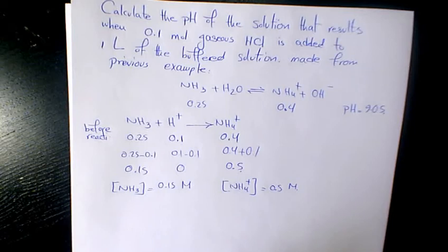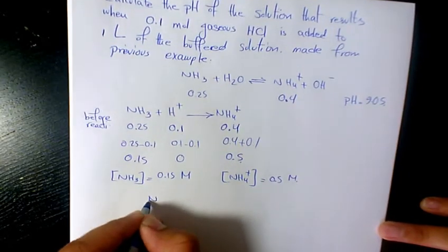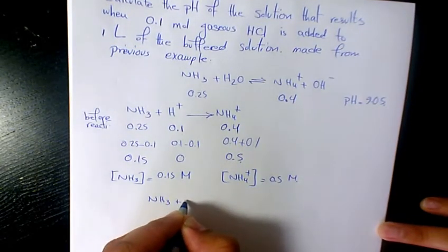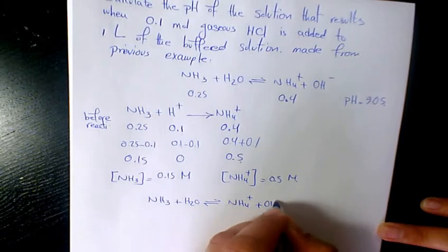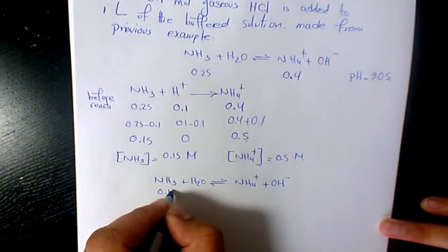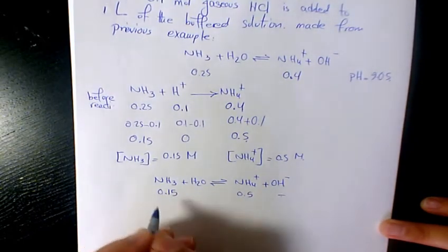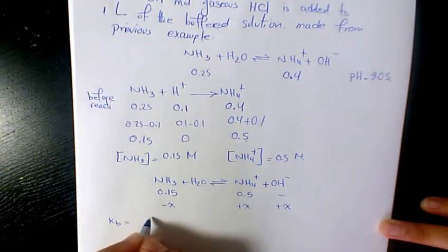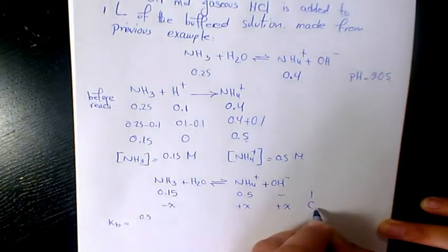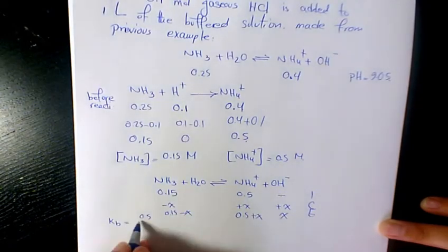So now I need to find out the pH again, similar to the previous example. We have NH3 + H2O ⇌ NH4+ + OH-. So we have 0.15, 0.5, and this one is negligible. Using the ICE table: minus x, plus x, plus x. So Kb will be 0.5 plus x times x divided by 0.15 minus x.